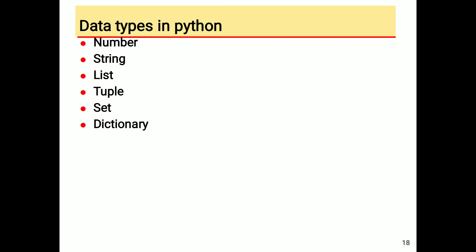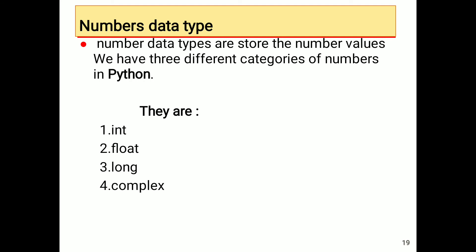Coming to the different data types in Python: number, string, list, tuple, set, and dictionary. We will now see the first one — the number data type. Number data types store numeric values.